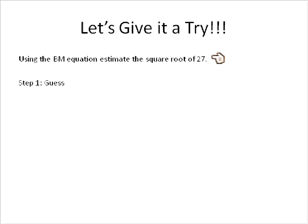If we're trying to find the square root of 27 using the BM equation, the first step is to guess. I say the square root of 25 is 5, so the square root of 27 is about 5.2. It's a little bit bigger. You could use 5.1, 5.2, 5.3, whatever you think it is. Somewhere around there. But I picked 5.2. Just a guess.